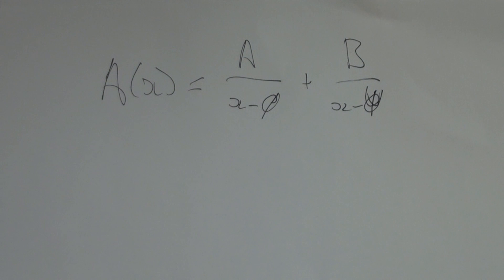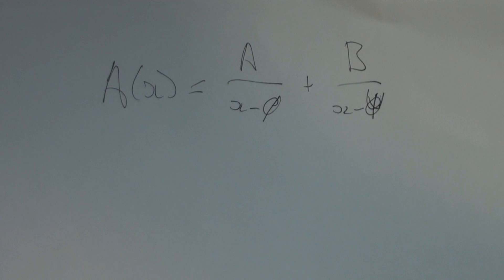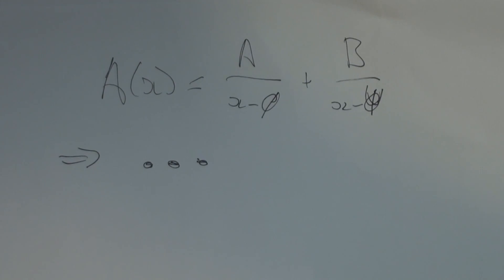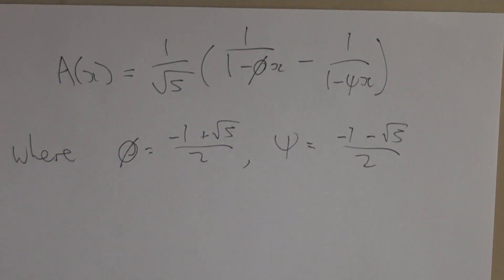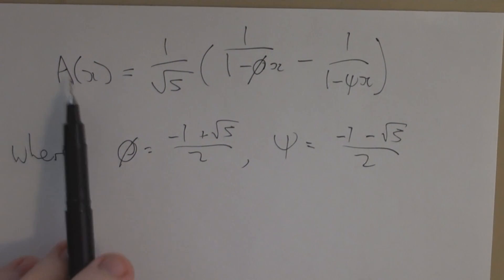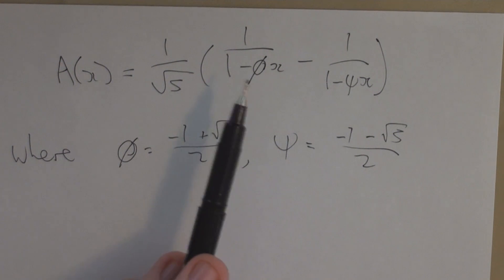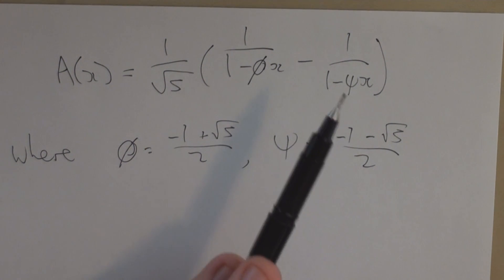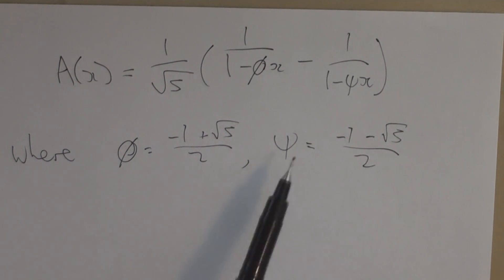Now we decompose using partial fractions, and we get a over x, take phi, plus b over x, take psi, and we solve. And this one is an exercise. We find this. We find that A can be rewritten in this form. 1 over root 5 times 1 over 1 minus phi x, take 1 over 1 minus psi x, where phi and psi are the two roots of that polynomial 1 plus x, plus x, sorry, 1, whatever it was. x squared plus x, take 1. That's right. 1 minus x, minus x squared. So, this is now our generating function.